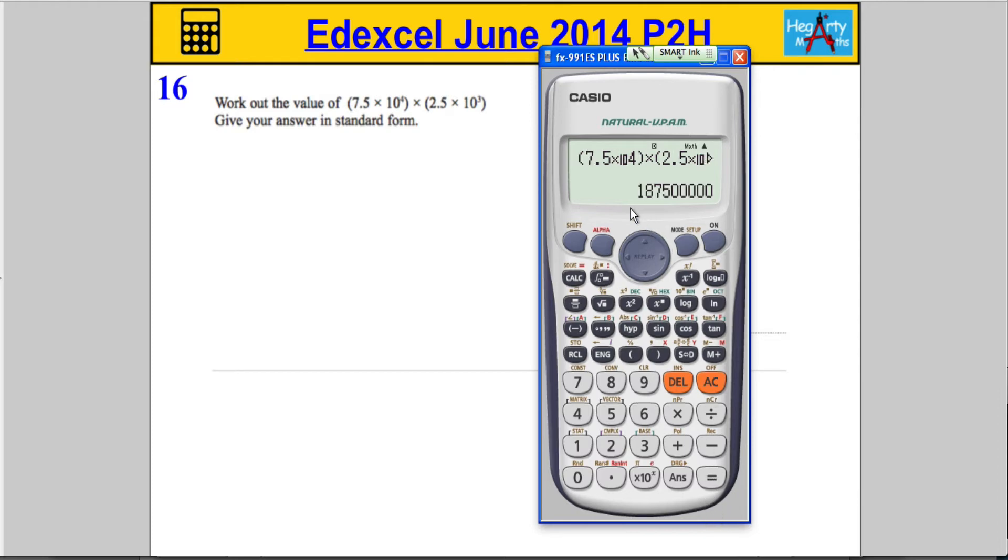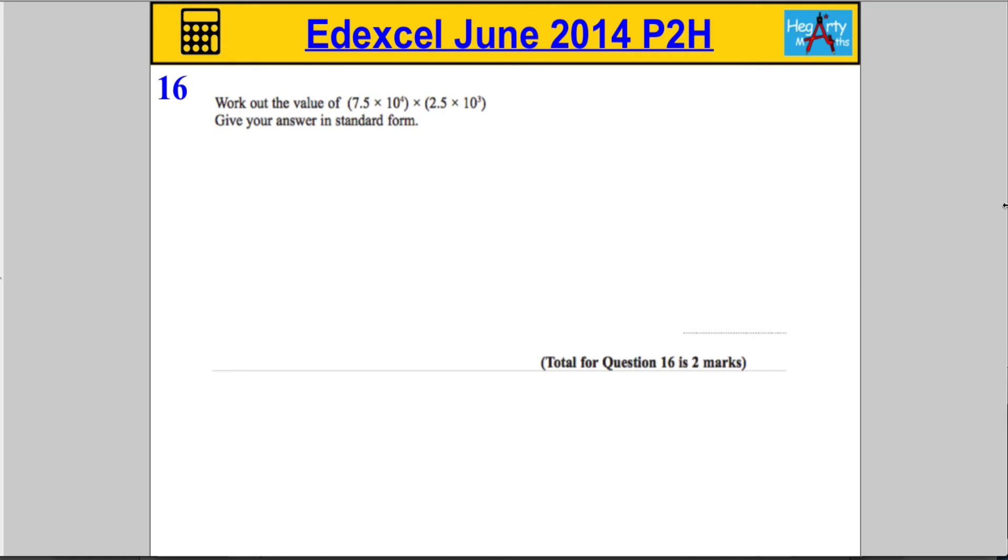Hit equals and we get this ridiculous looking number here. So 187500000, five zeros.